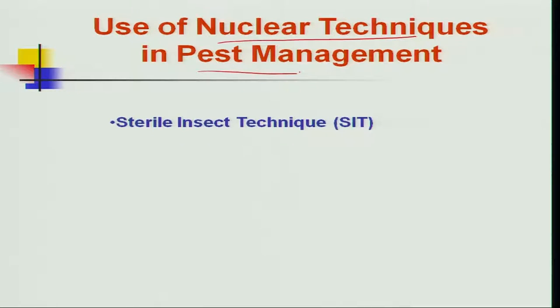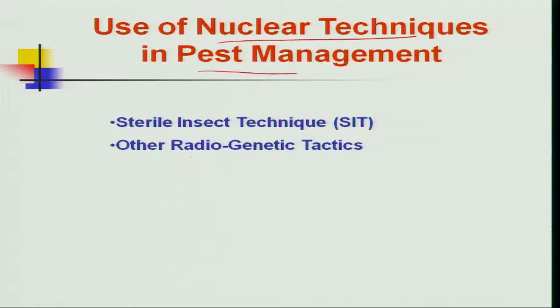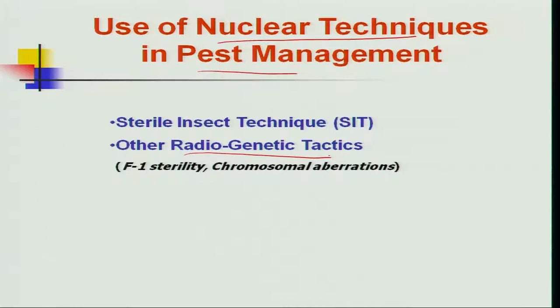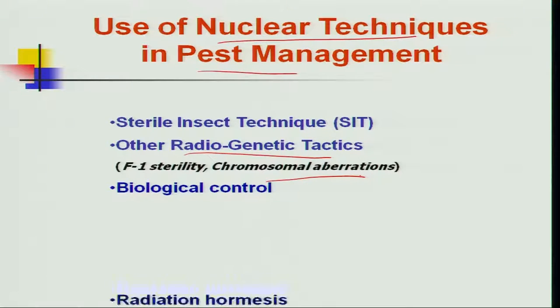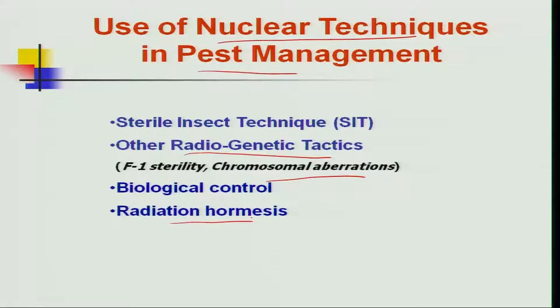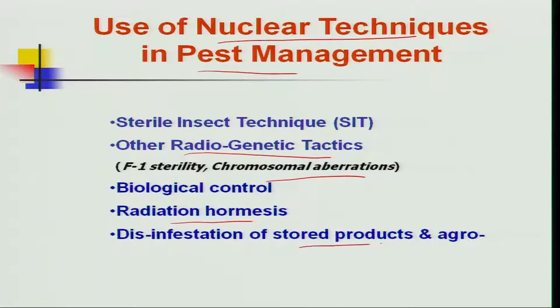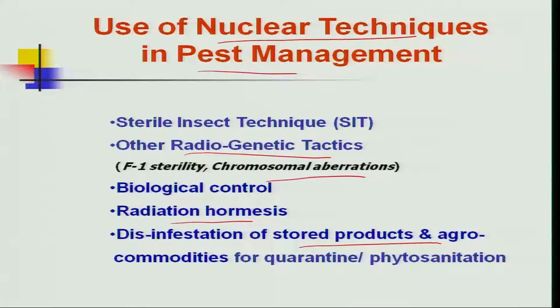These nuclear techniques include different methods. One is the sterile insect technique, also called SIT, sometimes referred to as the sterile insect release technique or SIRT. There are also other radiogenetic tactics, where we use the F1 sterility of insects, involving chromosomal aberrations that induce sterility. Other uses of radiation technology include biological control, radiation hormesis, and disinfestation of stored products and agro-commodities, which is very important in quarantine.